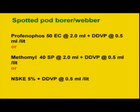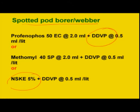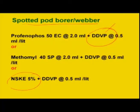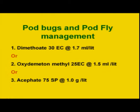In situations where spotted pod borer (Maruka) damage is present, there is a specific recommendation to add DDVP (dichlorvos), a fumigant, mixed with any of the recommended insecticides like profenofos, methomyl, or neem seed kernel extract. The addition of DDVP is important because Maruka webs and remains inside the web while feeding — the fumigant makes the larvae come out so the contact insecticide can work. In situations where pod bug and pod fly are a problem, systemic insecticides listed in the table should be used.